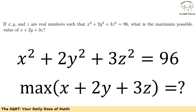Here in this problem, we have x, y, and z as real numbers and we already know that x squared plus 2 times y squared plus 3 times z squared is equal to 96, and we are going to find the maximum possible value of x plus 2y plus 3z.